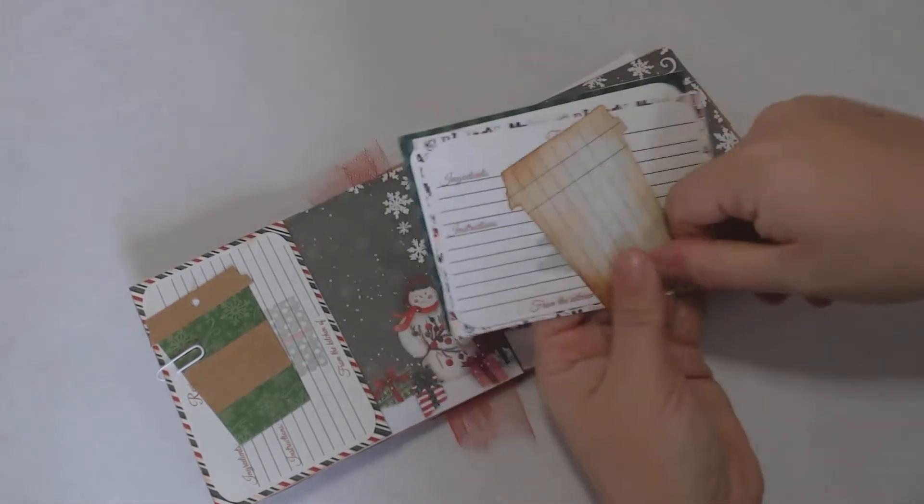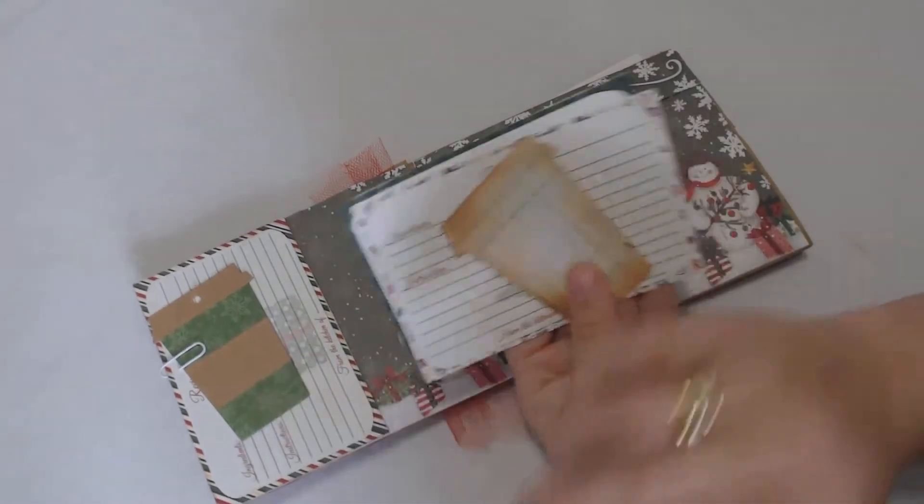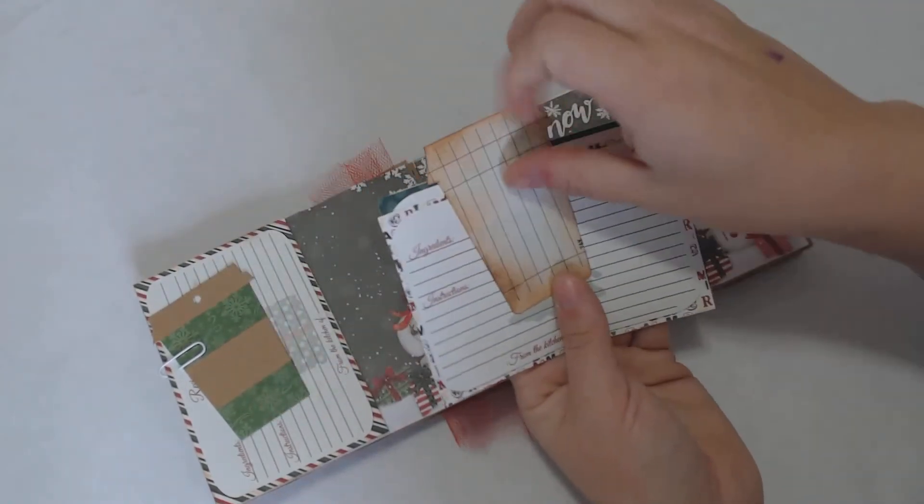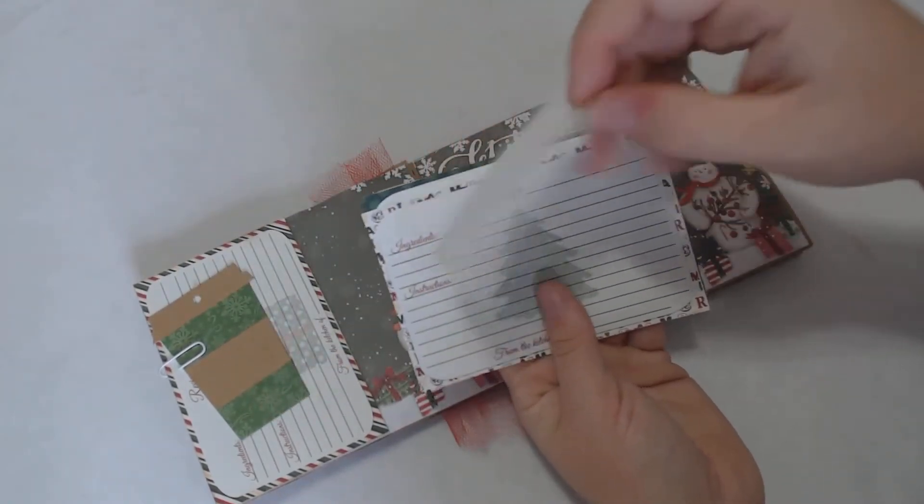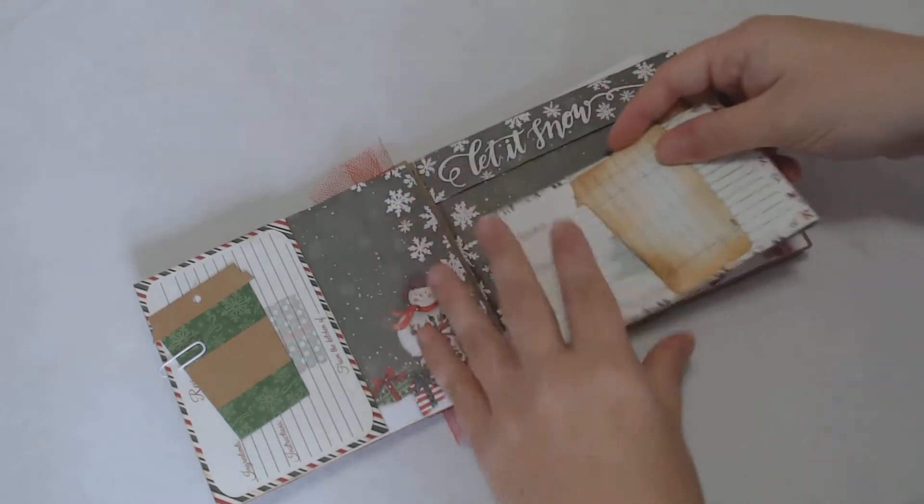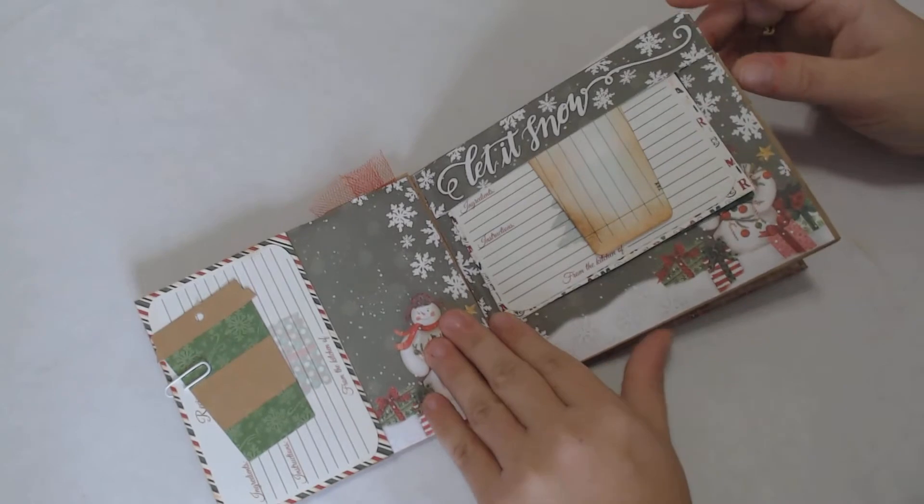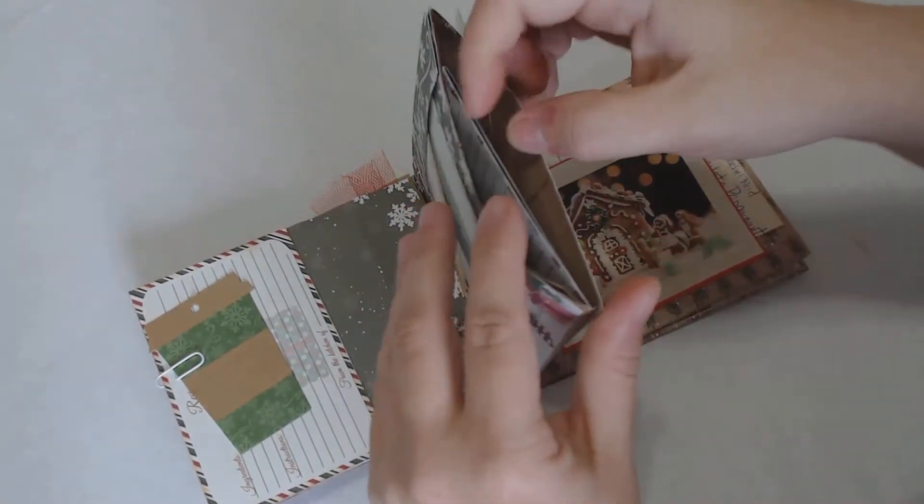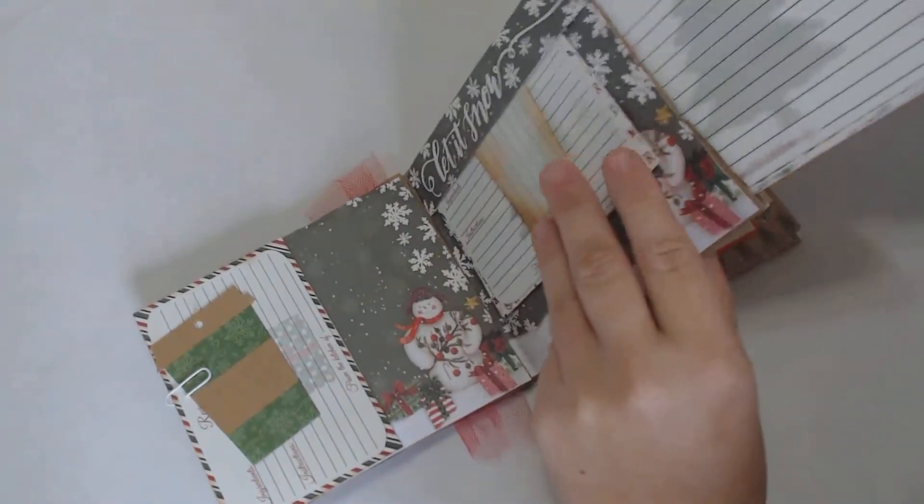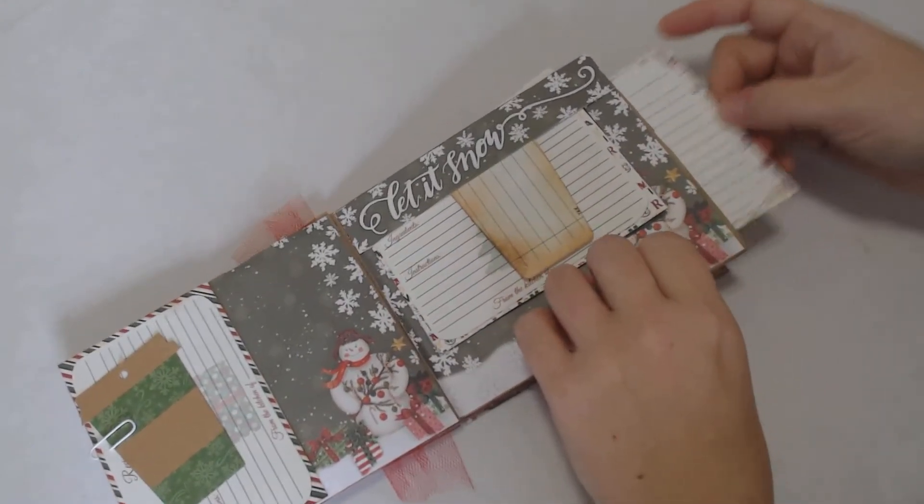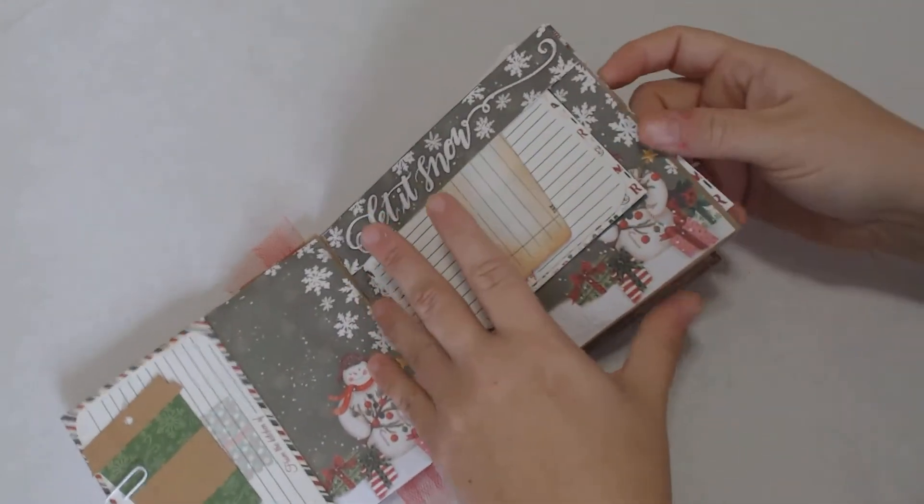This right here is a tag that I bought, and then I just traced it onto some guest check paper. These guest checks that I have are pretty durable and sturdy, and I thought what a great way to put some cute little recipes in there as well. Each page has this little tuck spot on the end that allows for more recipe cards.